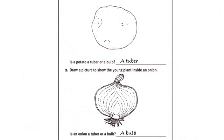Next, distribute a copy of Activity Sheet 10 Part A to each student and two boxes of crayons to each team of four. Instruct students to add buds to the diagram of the potato and draw the immature plant inside the onion bulb.